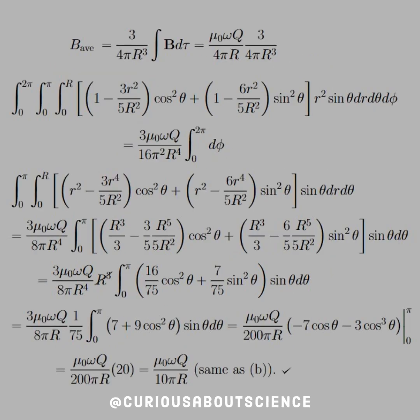Now we can calculate the average field. We do this by going back to the definition of the average field, which was 3 over 4 pi R cubed integral B d tau. I had to break this up into segments because it got really tedious. So we plug in B, and we get mu naught omega Q over 4 pi capital R times 3 over 4 pi R cubed.